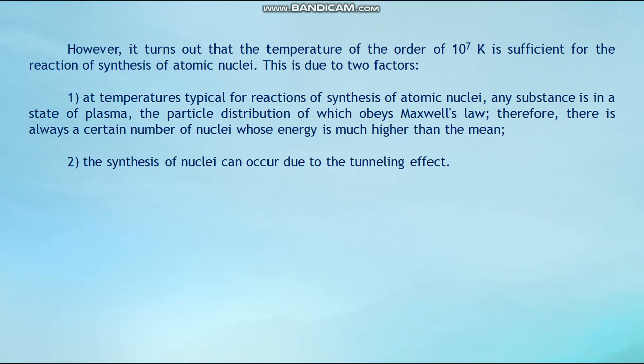This is due to two factors. First, at a temperature typical for reactions of synthesis of atomic nuclei, any substance is in a state of plasma, the particle distribution of which obeys Maxwell's law. Therefore, there is always a certain number of nuclei whose energy is much higher than the mean. Second, the synthesis of nuclei can occur due to the tunneling effect.